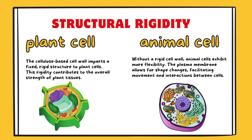Structural rigidity. Plant cell: the cellulose-based cell wall imparts a fixed, rigid structure to plant cells. This rigidity contributes to the overall strength of plant tissues. Animal cell: without a rigid cell wall, animal cells exhibit more flexibility. The plasma membrane allows for shape changes, facilitating movement and interactions between cells.